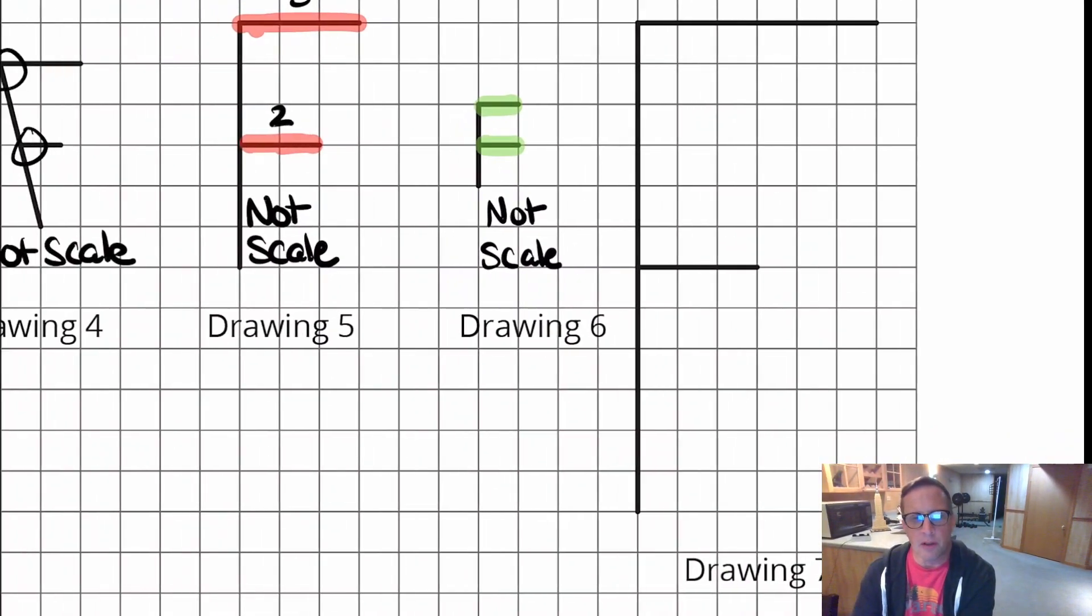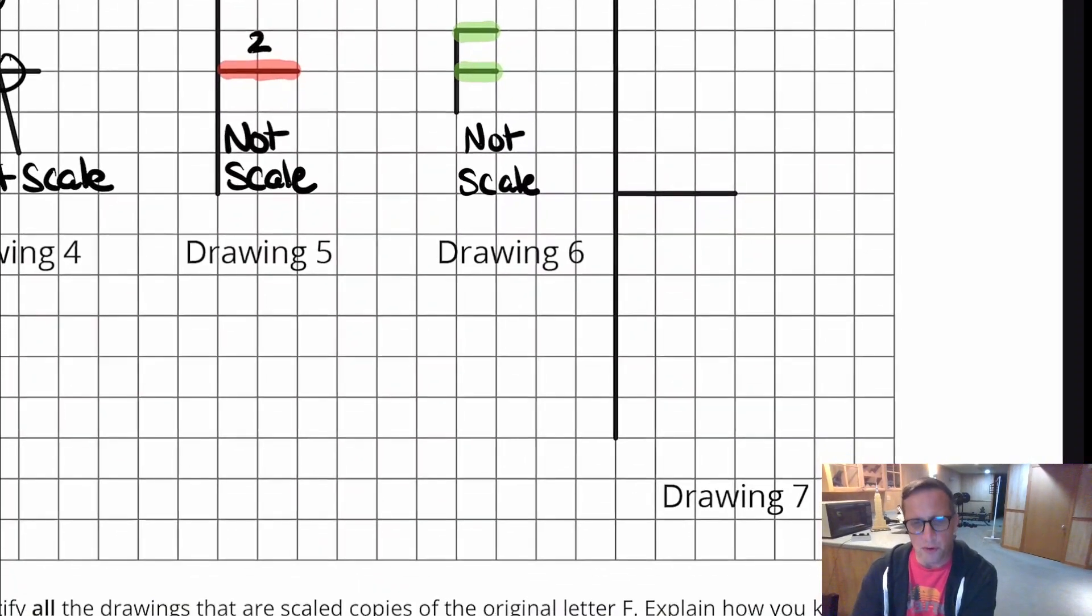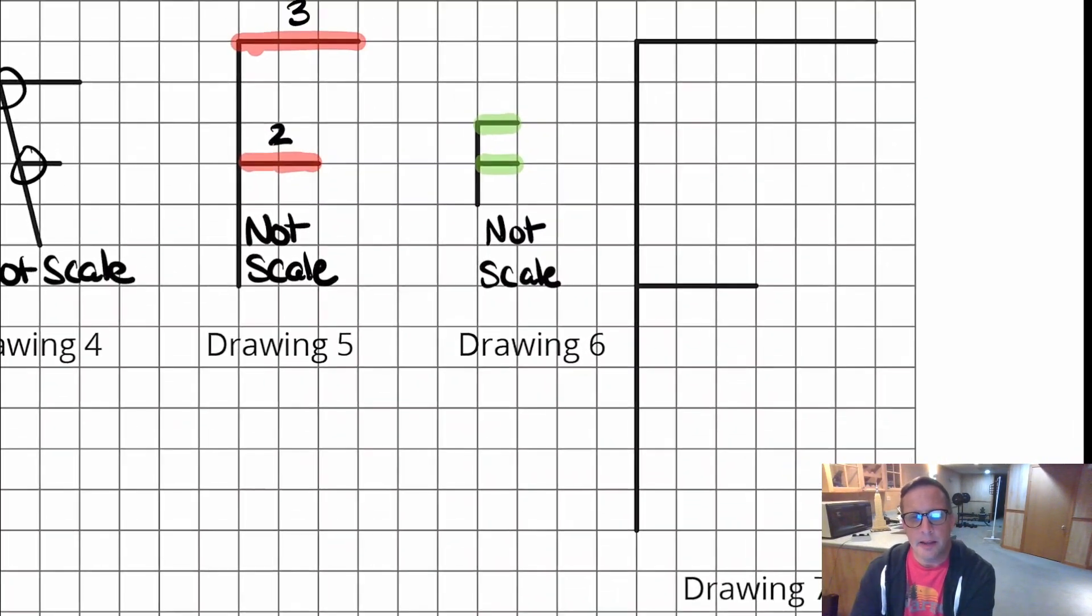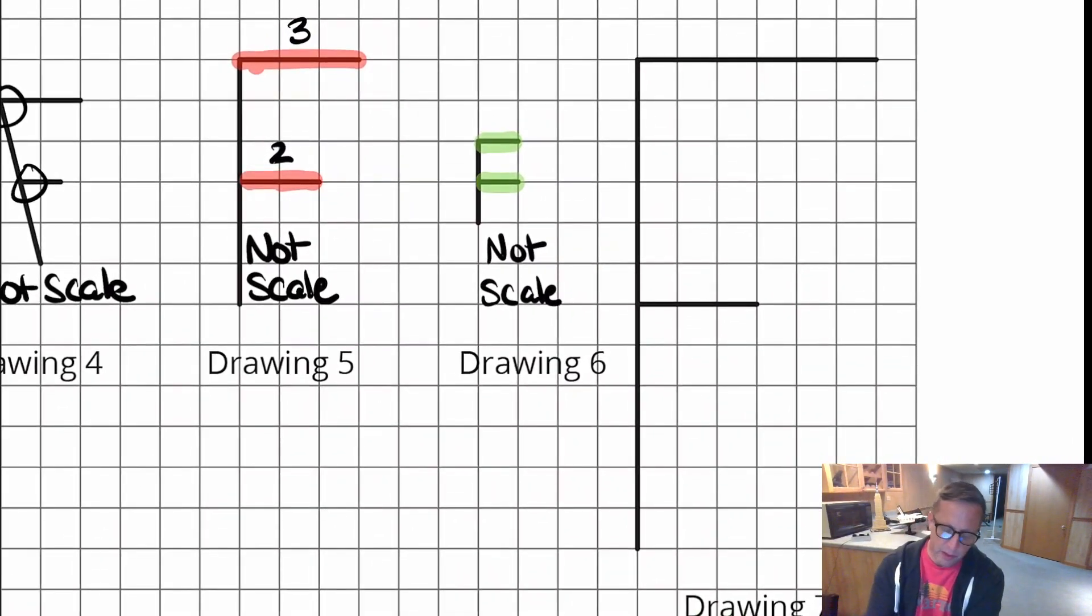And then the last one, the largest F you have on there for drawing seven, that is to scale. I've always started at the top, but right here, that's three. That's three units. So if this is to scale, that means the top part of that F should be six. It should be double. And it is, right? That's six units from left to right.